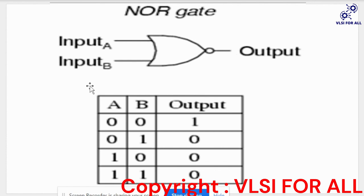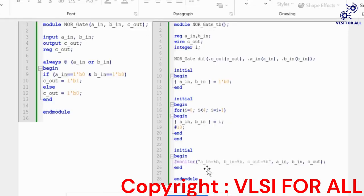We can see this in the truth table. A and B are inputs. If A and B are both 0, then our output is 1, and in remaining conditions our output is 0. Next, coming to the coding part — this is the RTL and this is the test bench.